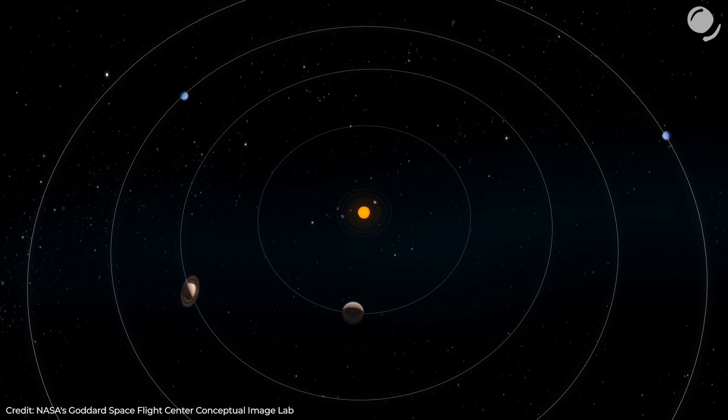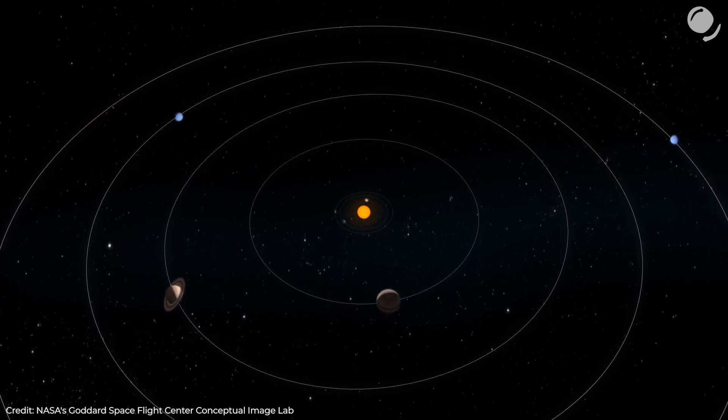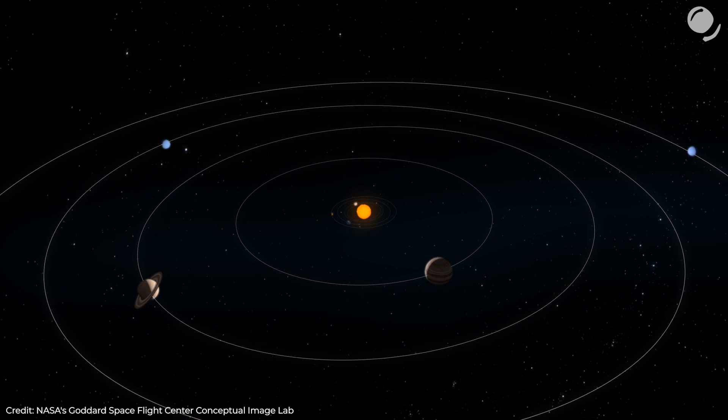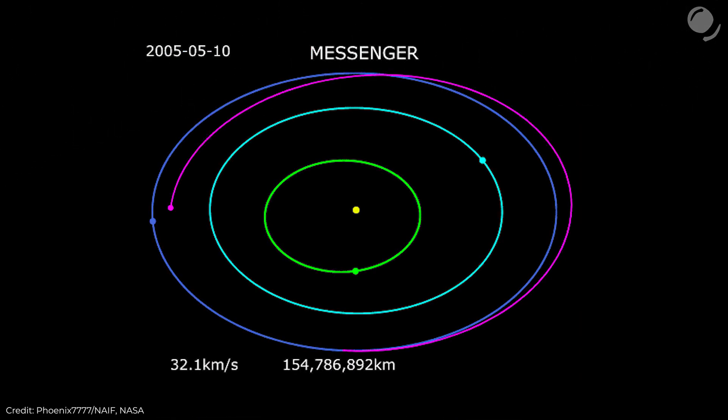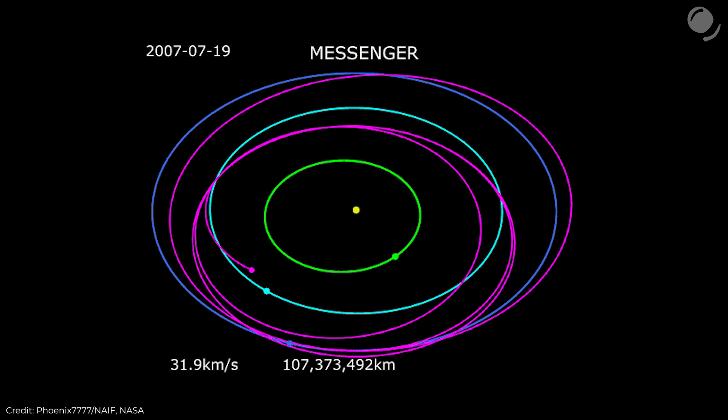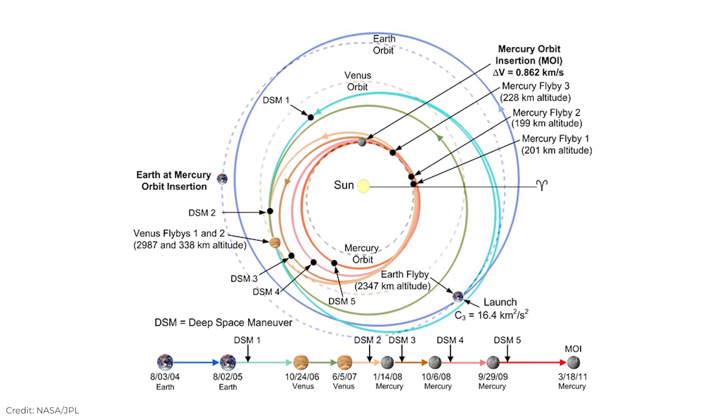Also if there were another planet, interplanetary spacecraft wouldn't be able to reach their destination. Spacecraft trajectory calculations account for positions of planets. Also they're used to perform gravity assists. This is the trajectory of messenger spacecraft that studied Mercury. If the unseen planet hadn't been taken into account, but actually had been there, messenger wouldn't have reached its destination. We would also notice the gravitational effect of the unseen planet on other planets.